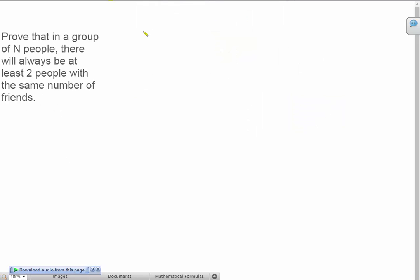Okay, so the second example is prove that in a group of n people, there will always be at least two people with the same number of friends. So, how many friends can any person in this group have? Well, he can have between zero to n minus one friends, right? Because obviously